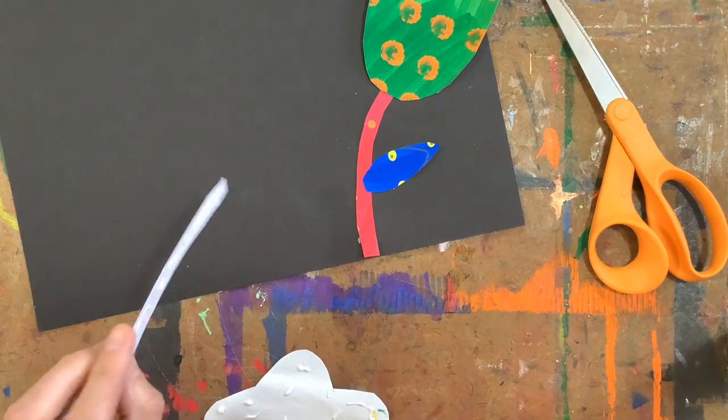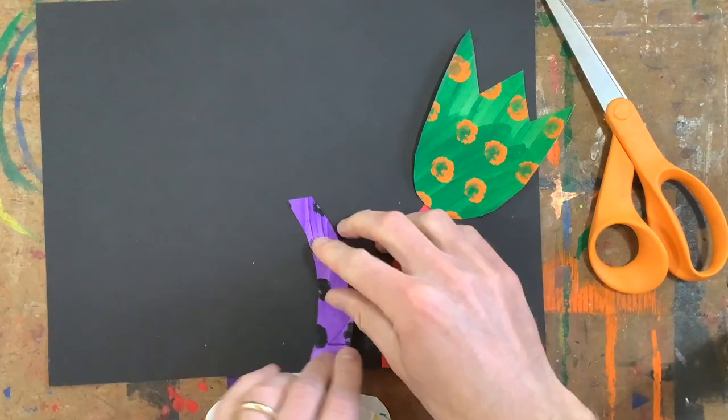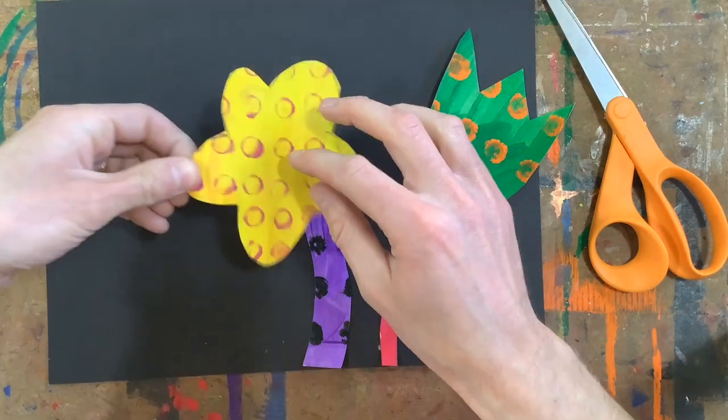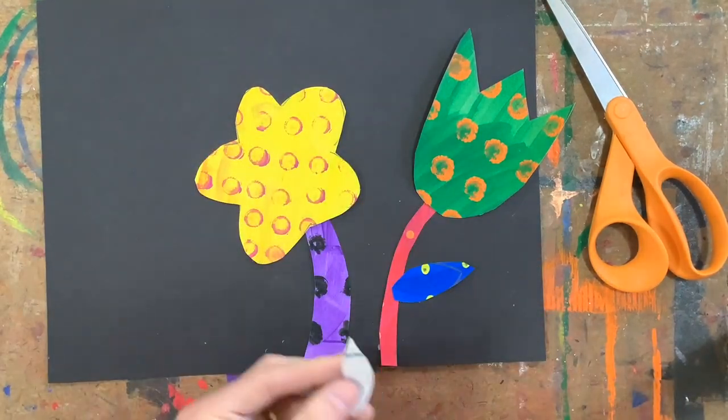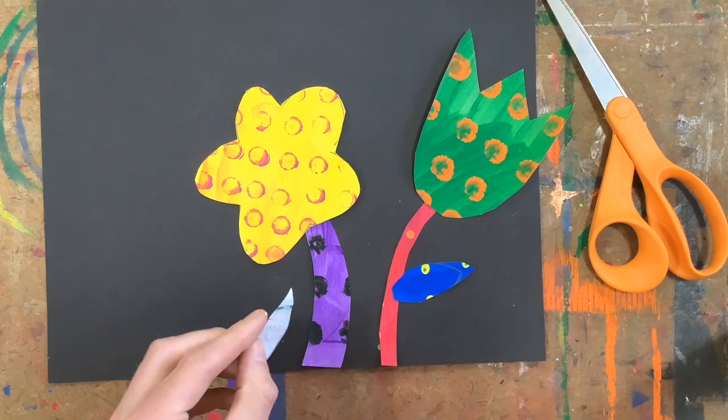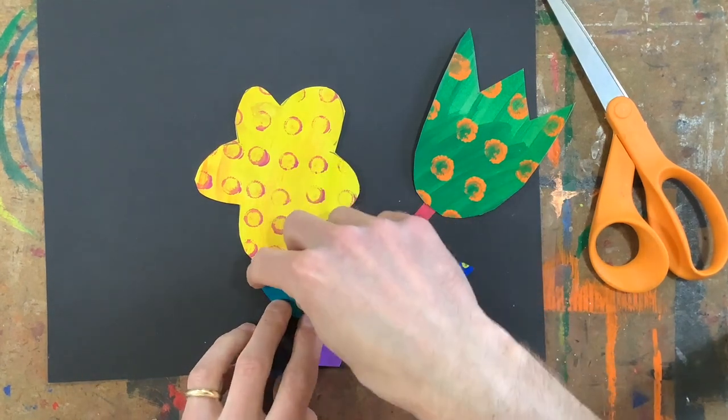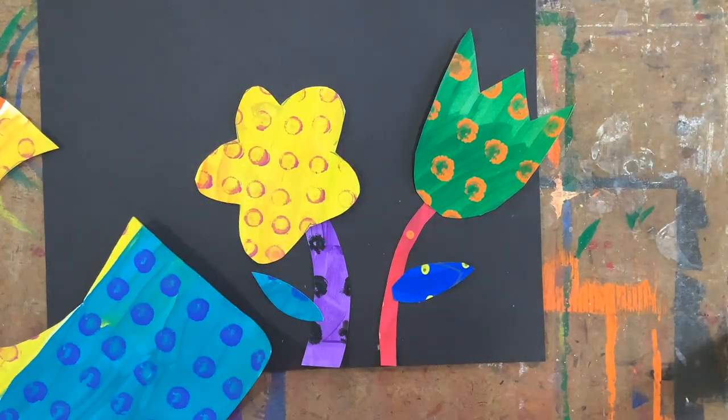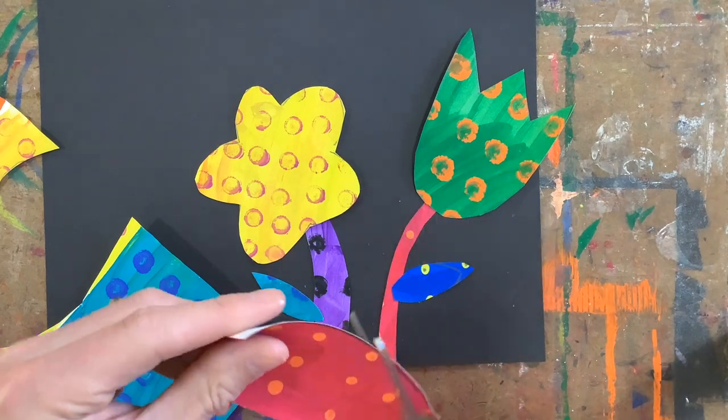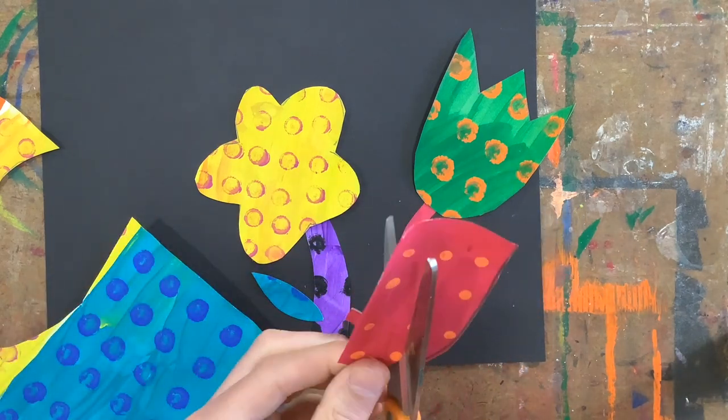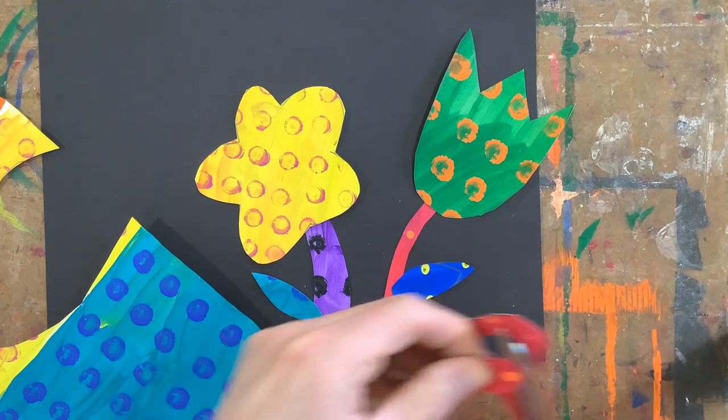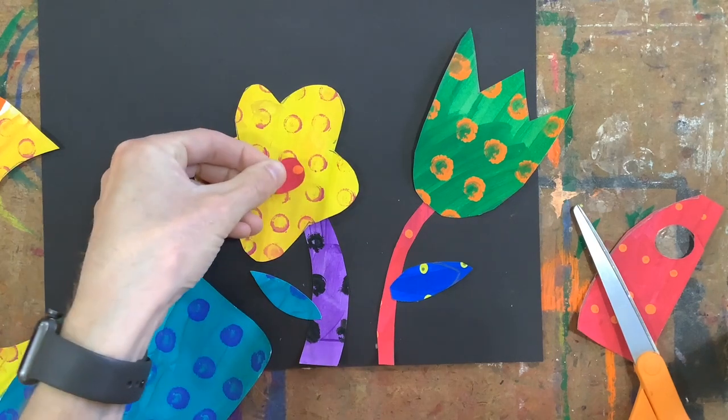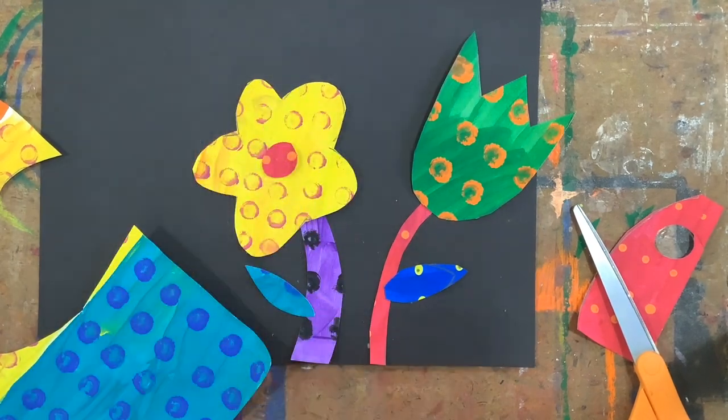I would probably start off by putting glue on the stem. I almost messed that up. That down, glue on my leaf. Notice too my stems aren't always just straight lines - sometimes I kind of curve them. I think with this one I'll go back to that red that I had. I'll cut out a circle. And I'm gonna glue that down in the middle kind of like this. Hey, I got one more flower to get done.